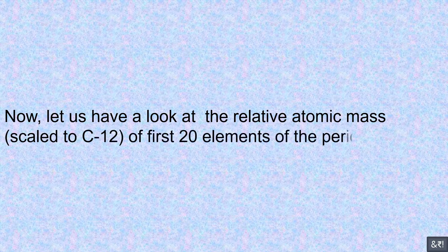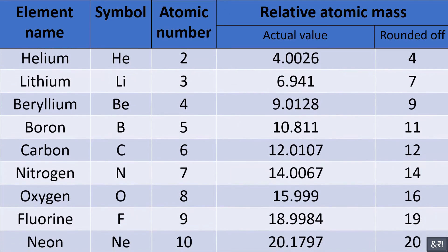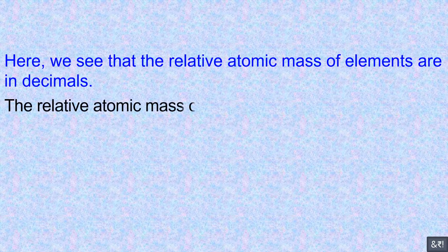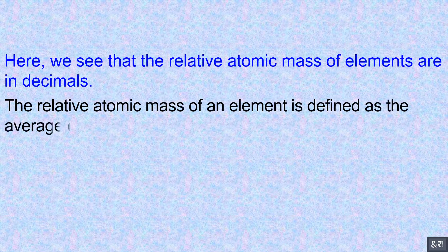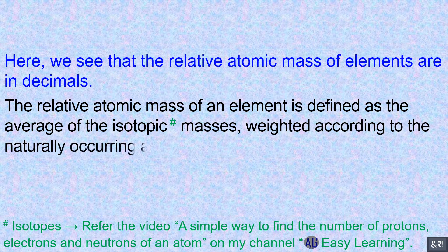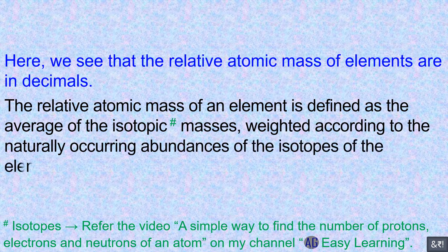Now, let us have a look at the relative atomic mass scaled to C-12 of the first 20 elements of the periodic table. We see that the relative atomic masses of elements are in decimals. The relative atomic mass of an element is defined as the average of the isotopic masses, weighted according to the naturally occurring abundances of the isotopes of the element.